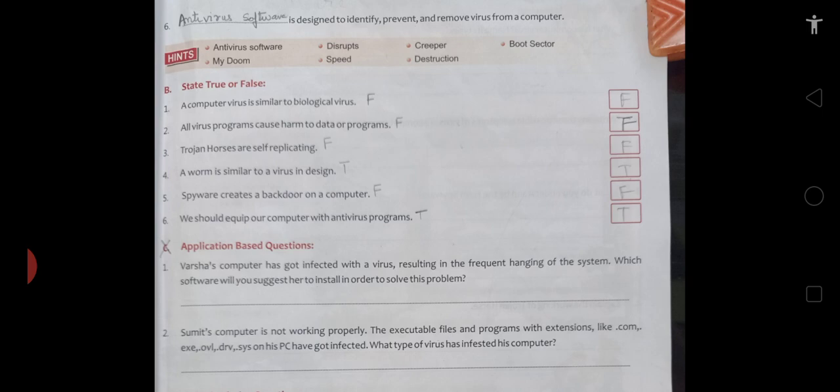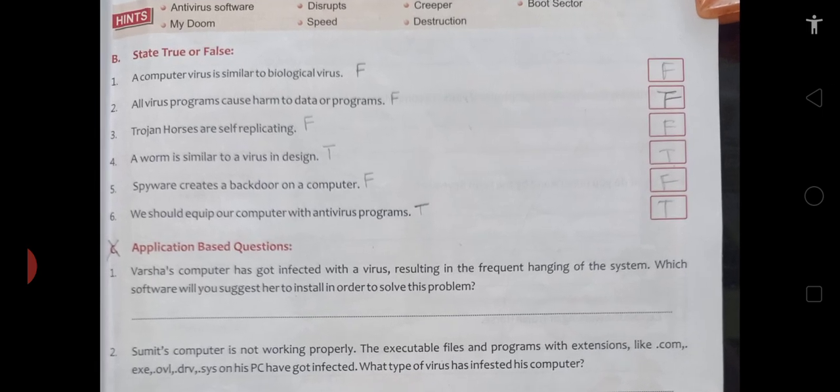It may even cause loss of speed without causing harm to the data. Then next is: Trojan horse is a self-replicating program. So it is false. It is not a self-replicating program. Then next is children, a worm is similar to a virus in design. So it is true.